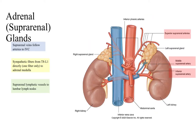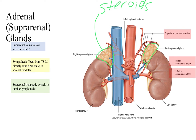Sitting on top of each kidney you will have a pyramid-shaped gland called the suprarenal gland or the adrenal gland. Suprarenal means on top of the kidney; adrenal means next to the kidney. They're roughly pyramid in shape and sit on top of the kidneys. The adrenal glands are the primary glands where steroid hormones are secreted from. In the adrenal medulla, you have catecholamines — epinephrine and norepinephrine.